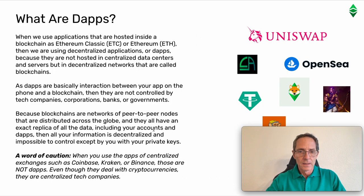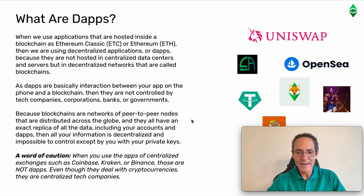When we use applications hosted inside a blockchain like Ethereum Classic (ETC) or Ethereum (ETH), we are using decentralized applications or dApps, because they are not hosted in centralized data centers and servers, but in decentralized networks called blockchains. Since dApps are basically interactions between you, your app on the phone, and the blockchain, they are not controlled by tech companies, corporations, banks, or governments. Because blockchains are peer-to-peer networks distributed across the globe, and they all have an exact replica of the data including your accounts and dApps, your information is decentralized and impossible to control except by you with your private keys.